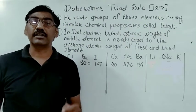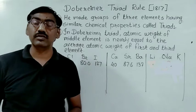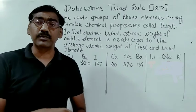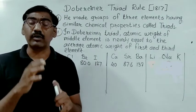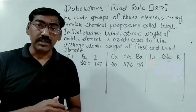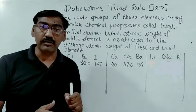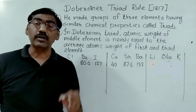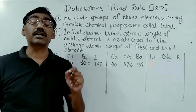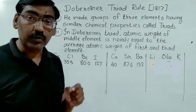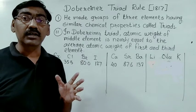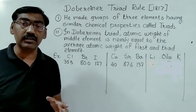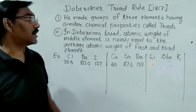Hello, my dear students. This is our second lecture on the periodic table. In the last lecture, we discussed some attempts made by scientists before the modern periodic table for grouping of elements — Lavoisier's classification, Newlands' hypothesis, and other early attempts to simplify the study of elements.